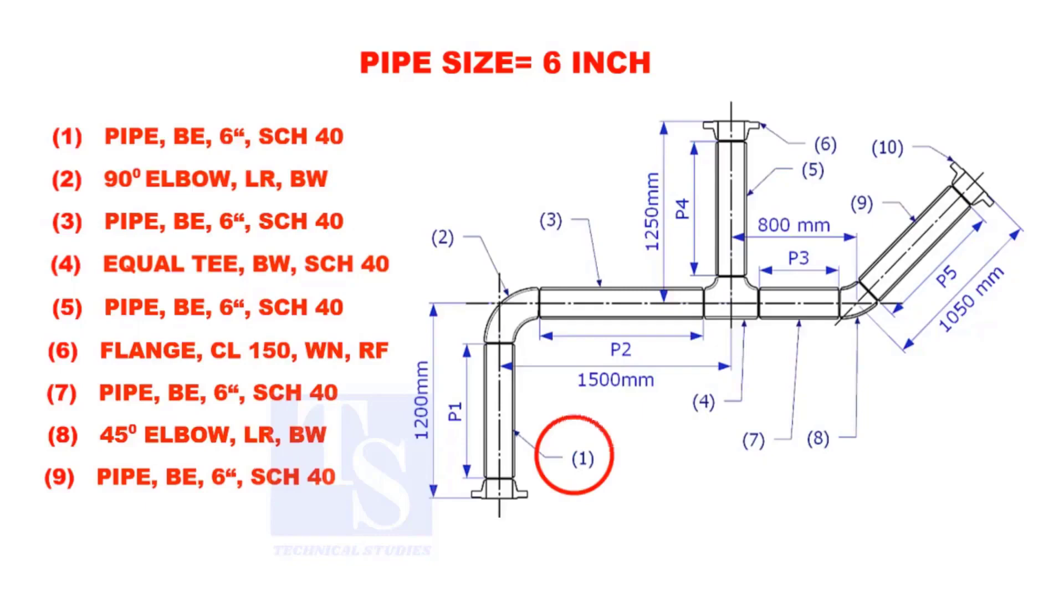Let us calculate the length of pipe 1. To calculate the length of pipe 1, we need to reduce the flange height and the elbow center from the measurement 1200mm.